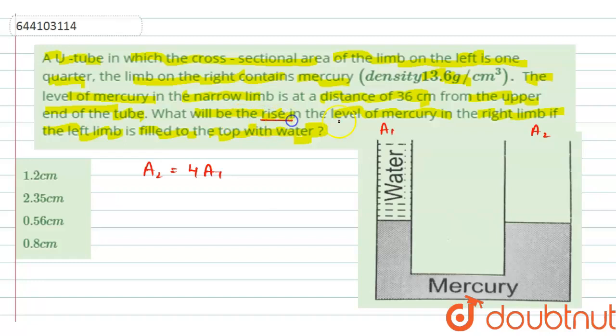And we have to find the rise in the level of the mercury in the right limb. So when we place the water over mercury, there will be some rise in the level of mercury. Let's say the rise is x.